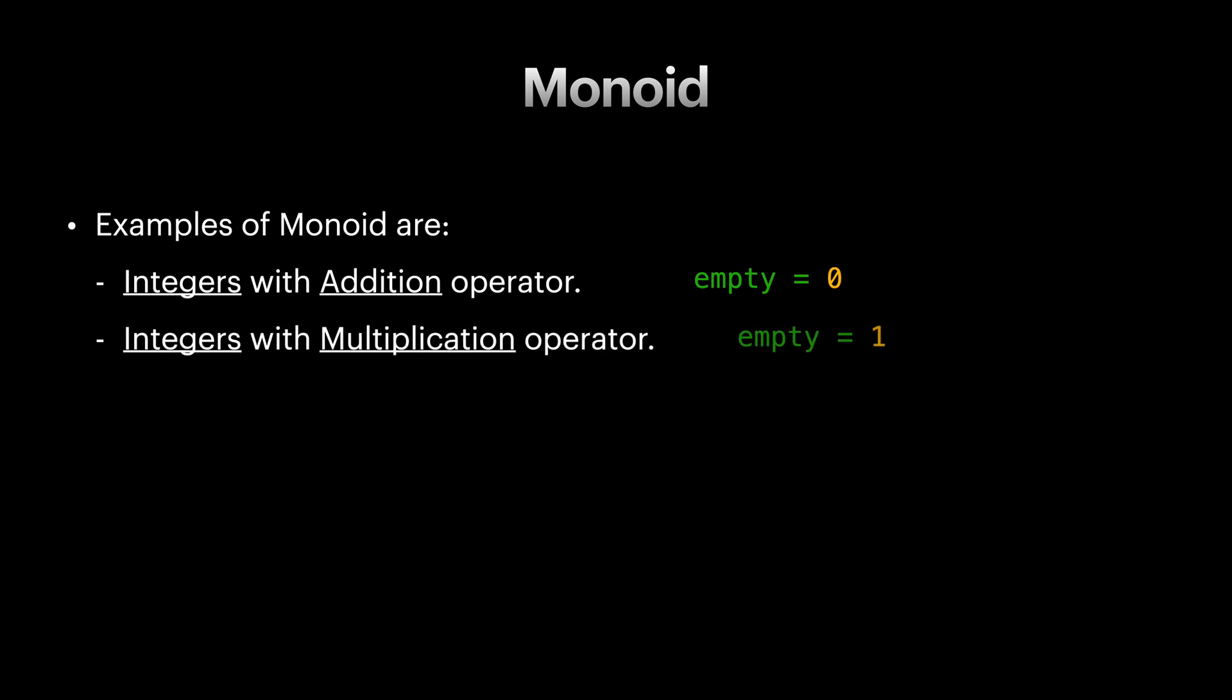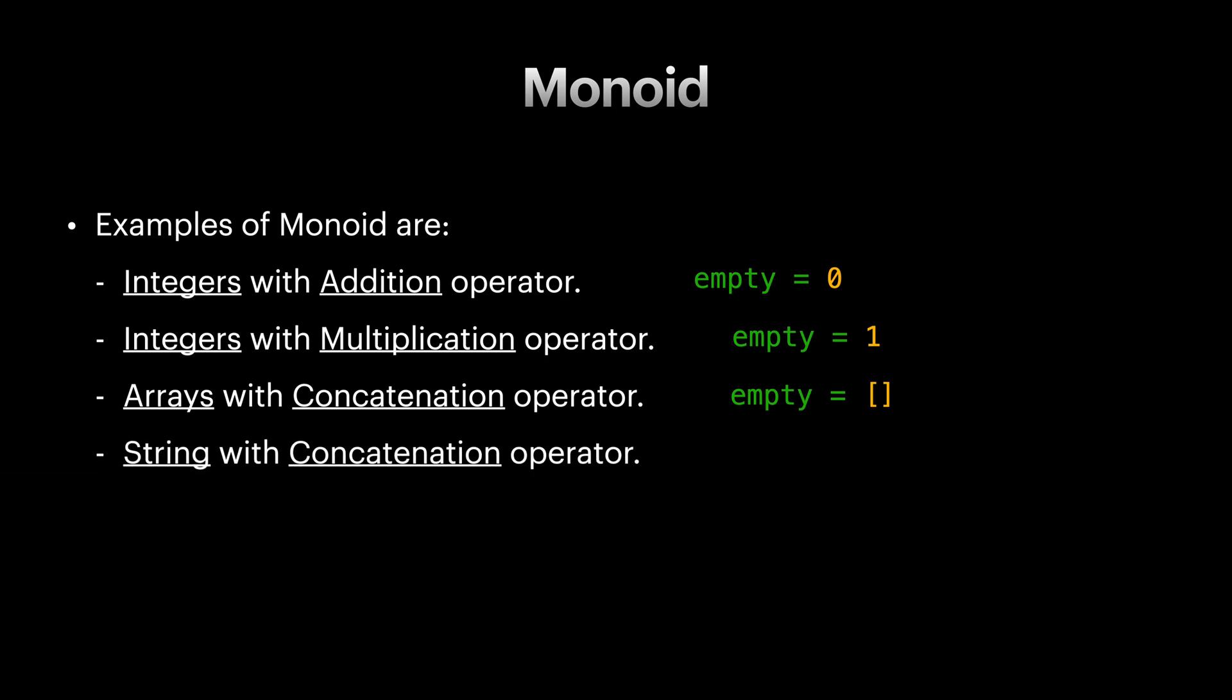For integers and multiplication, the empty value is one, because multiplying any integer with one results to that integer. What about arrays and array concatenation? The empty value for this, as you guessed, is empty array. And for a string and string concatenation, the empty value is an empty string.